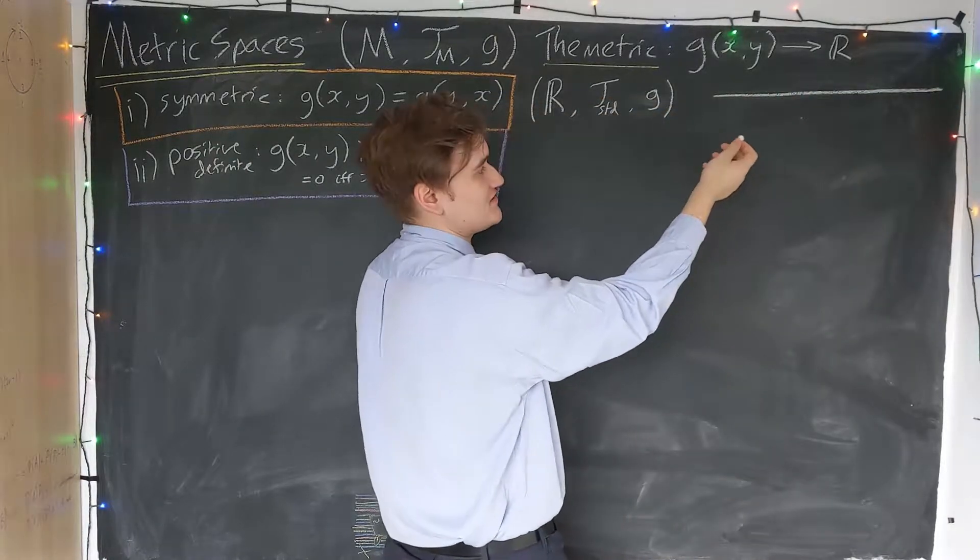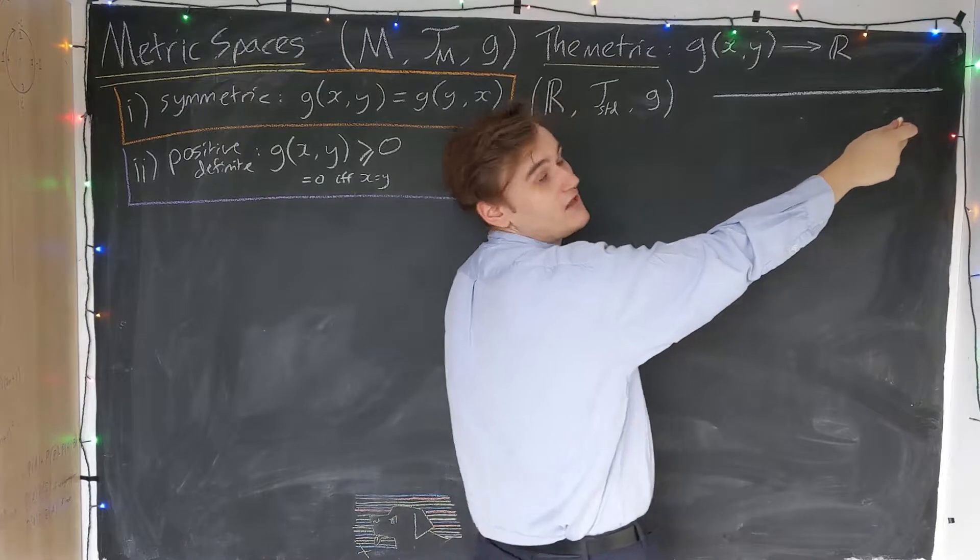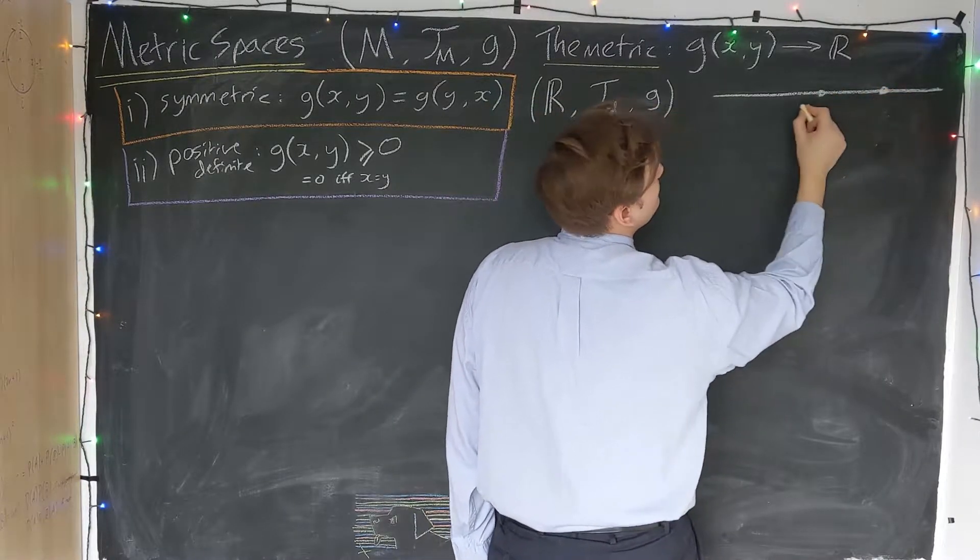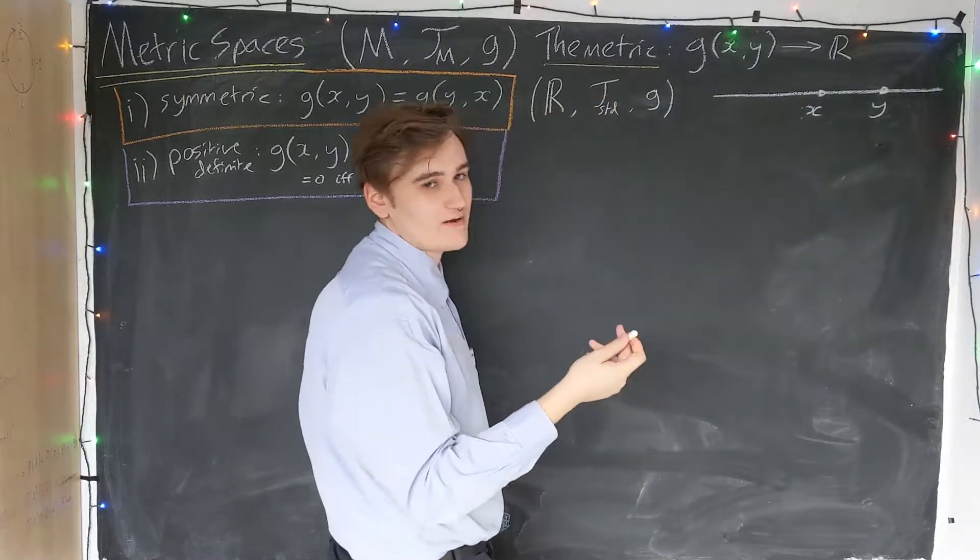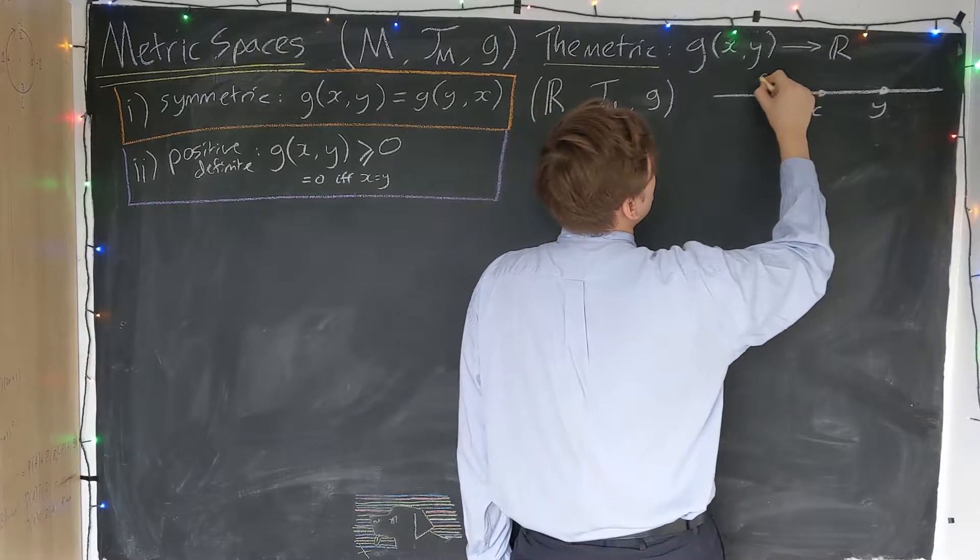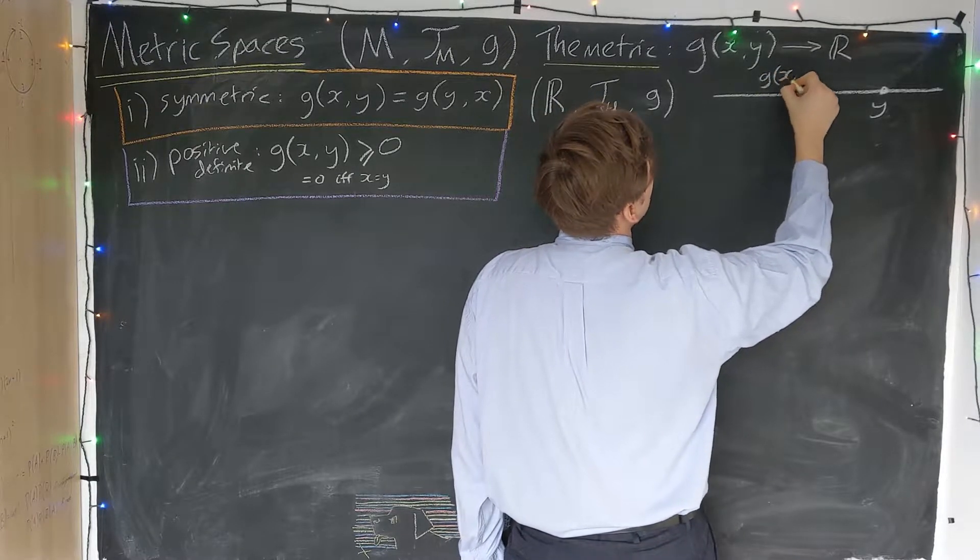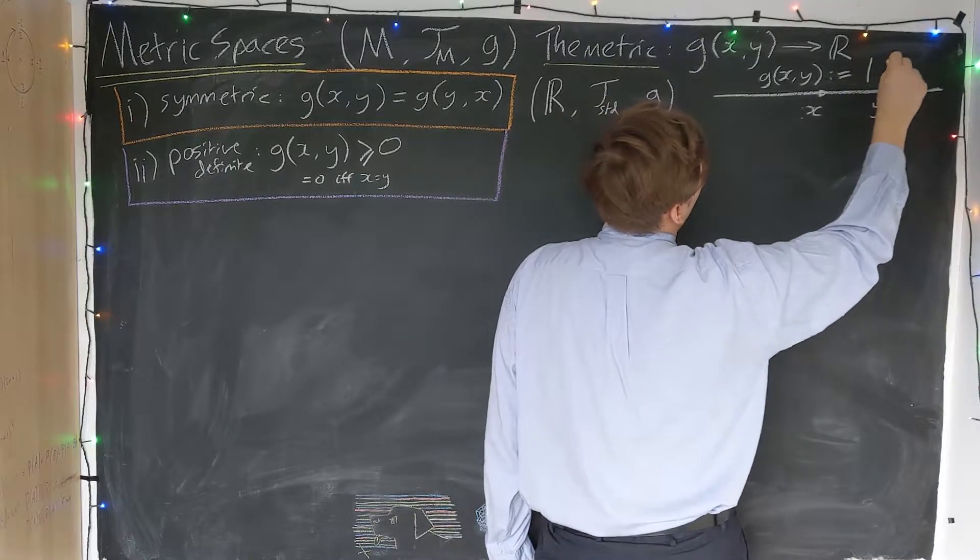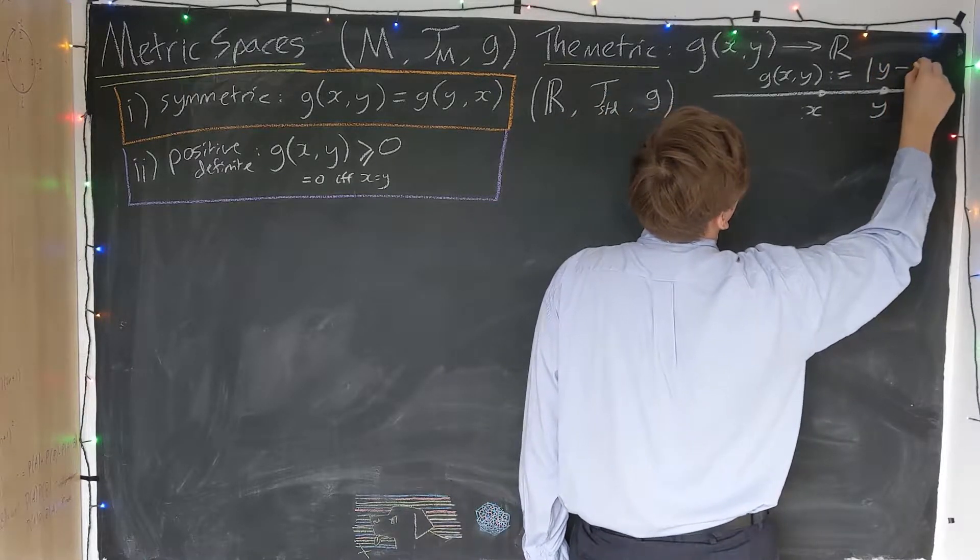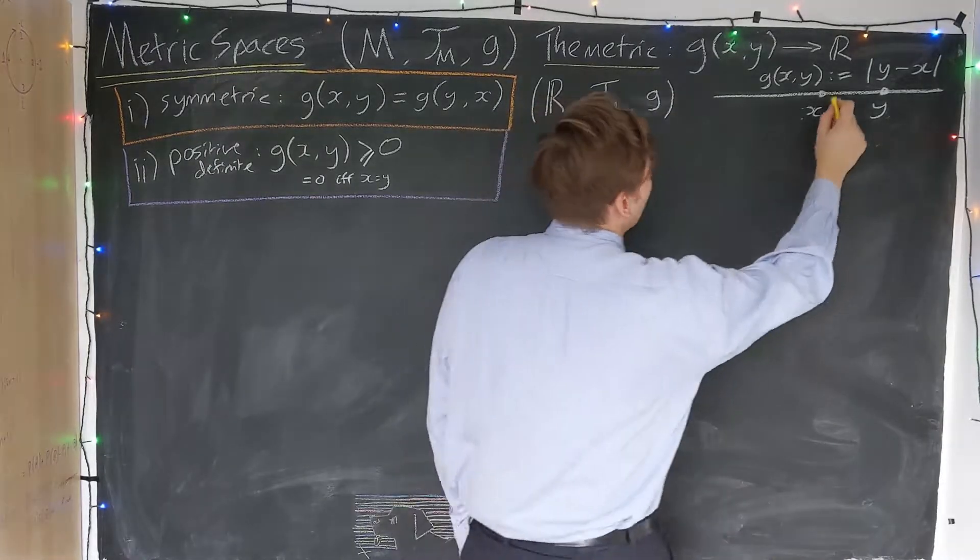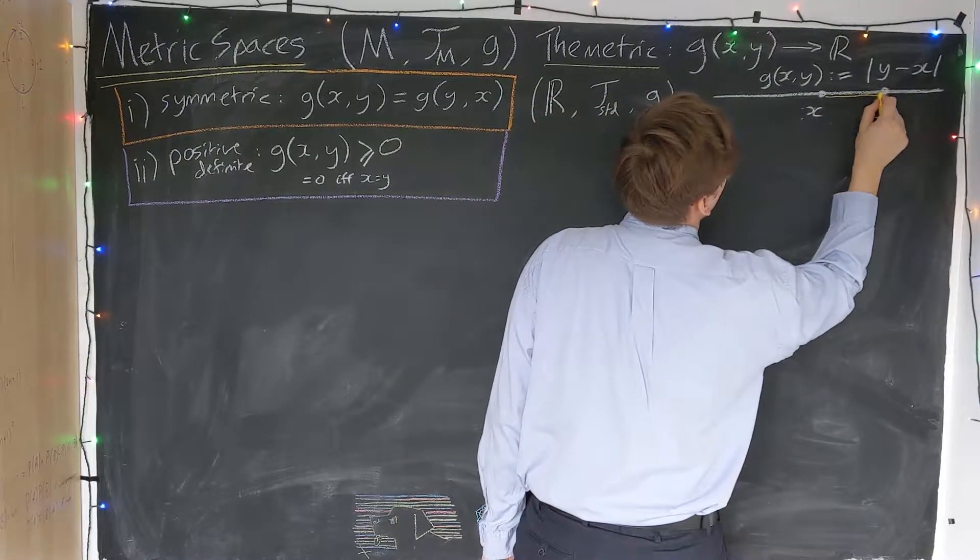How do we define a metric for this space? Well, what is the topological space? It's just a real line. We can consider points on the line. And we define the metric as simply g of x and y is just the absolute value of their difference. So intuitively, it's this distance along here.